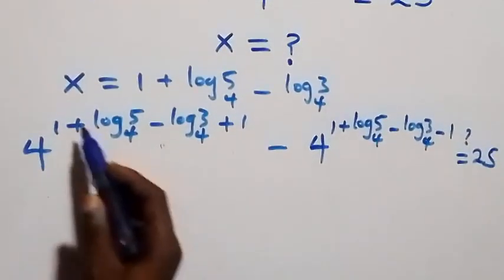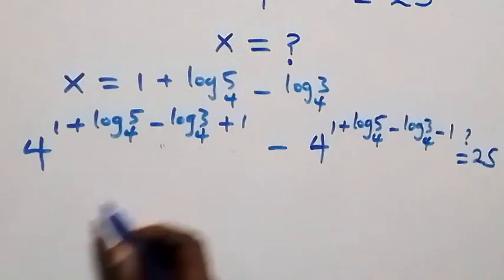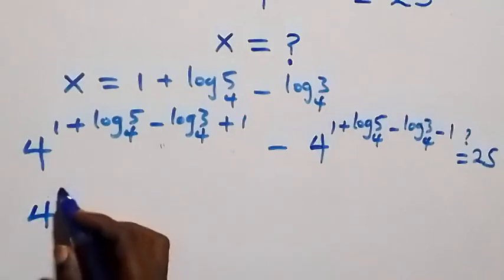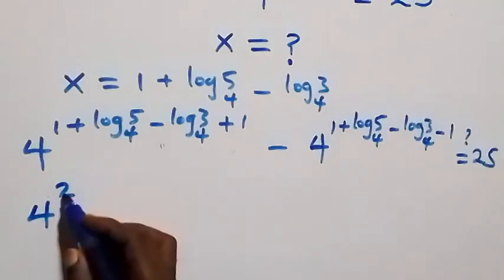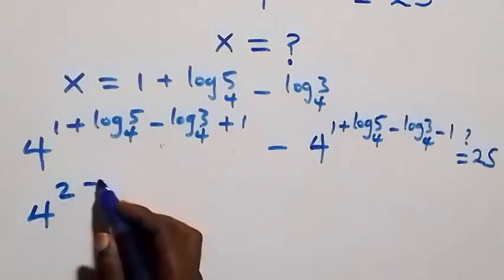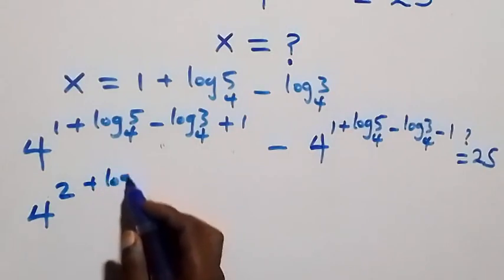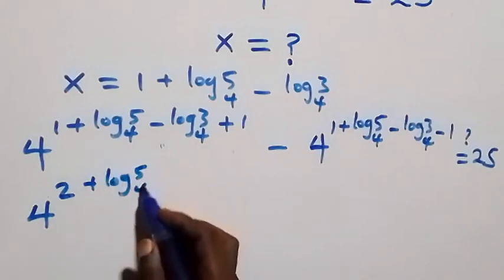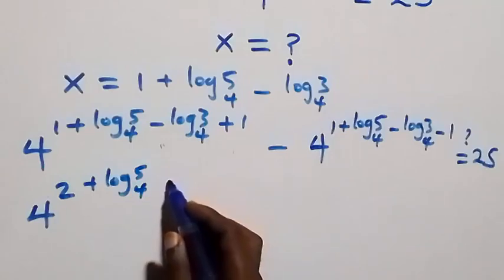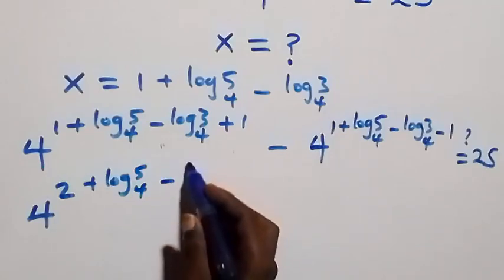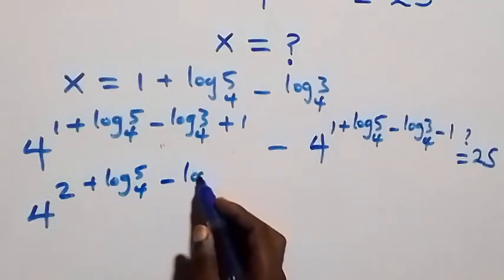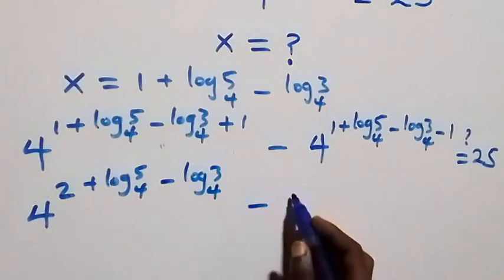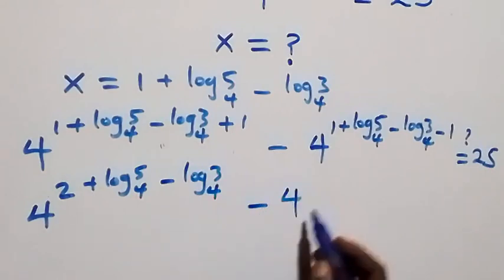Here 1 plus 1 is 2, so the first term is four raised to power 2 plus log 5 to base 4 minus log 3 to base 4. Applying the law of indices a raised to power m plus n equals a raised to power m times a raised to power n, this becomes four squared times four raised to power log 5 base 4, divided by four raised to power log 3 base 4.